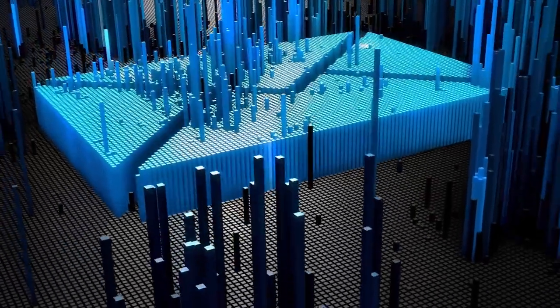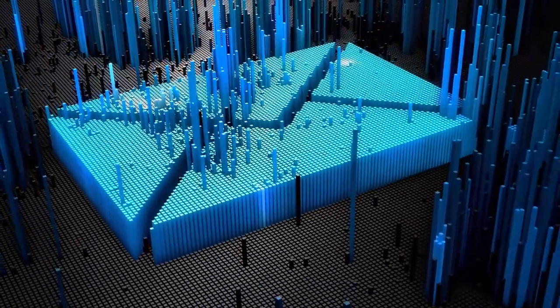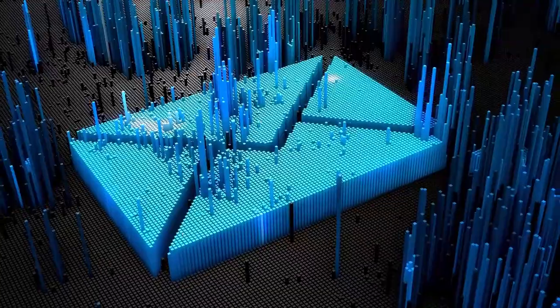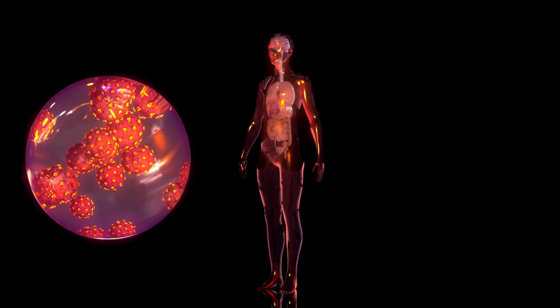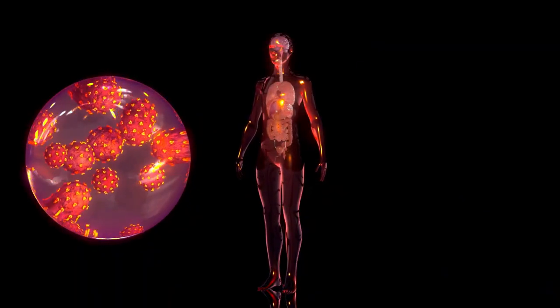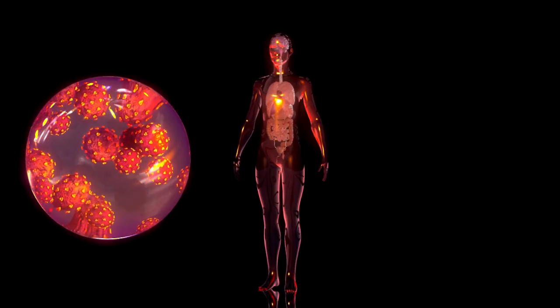The observable universe is the part of the universe that we can actually see and study using telescopes and other scientific tools. This part includes everything from nearby stars and planets to the farthest galaxies we can detect.